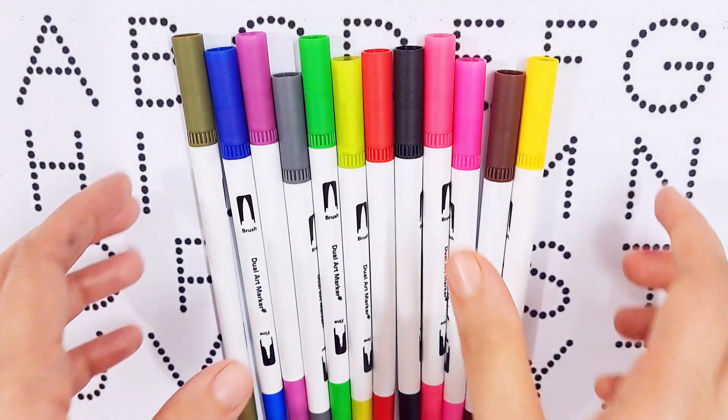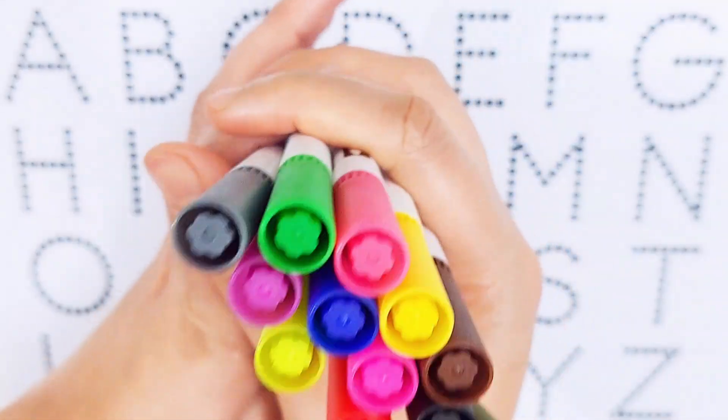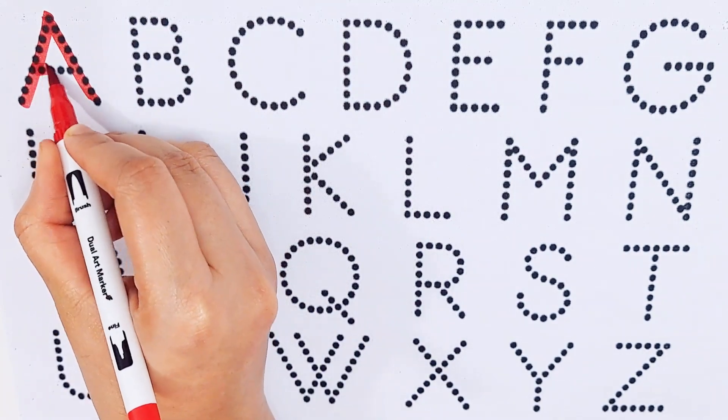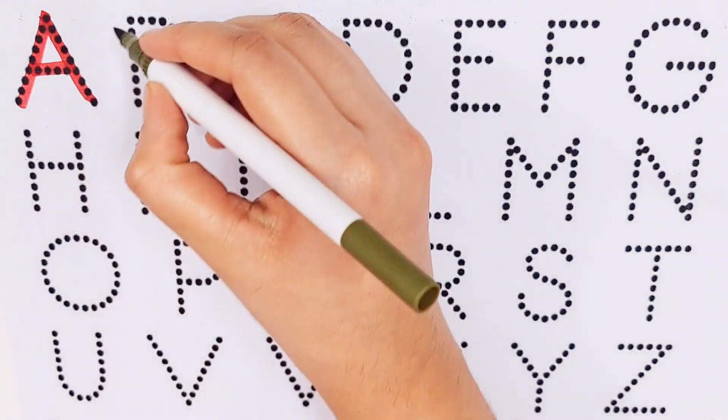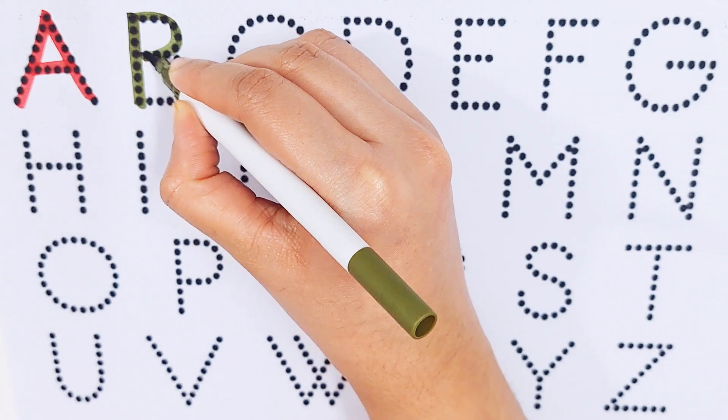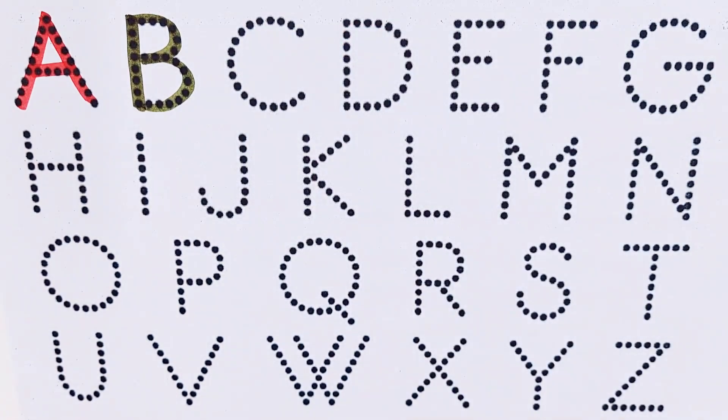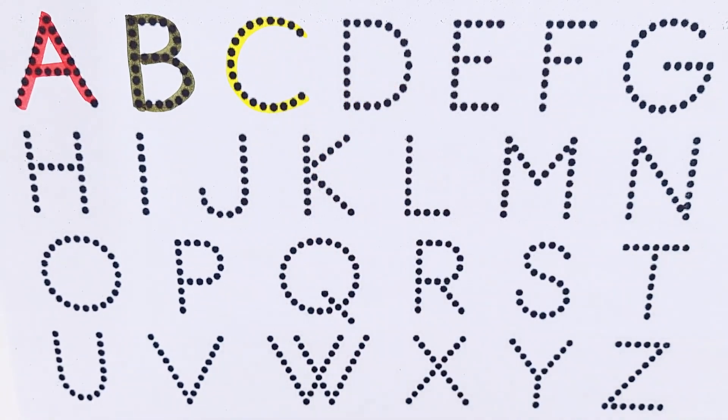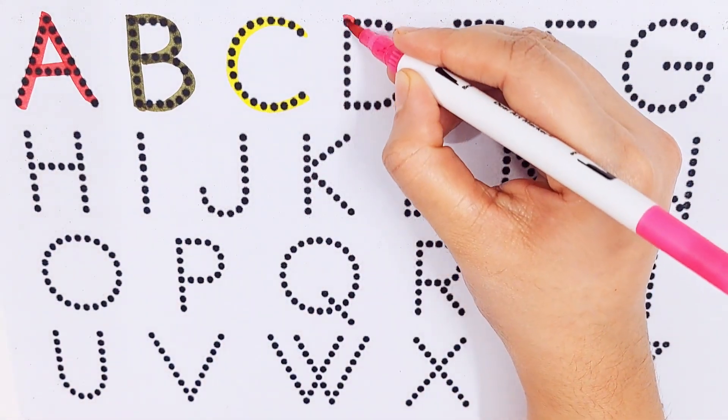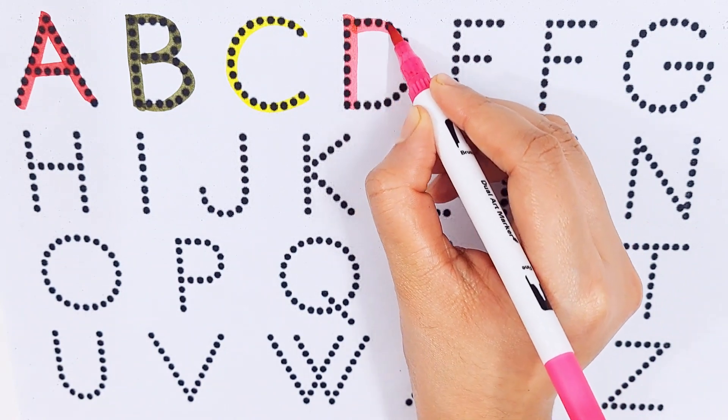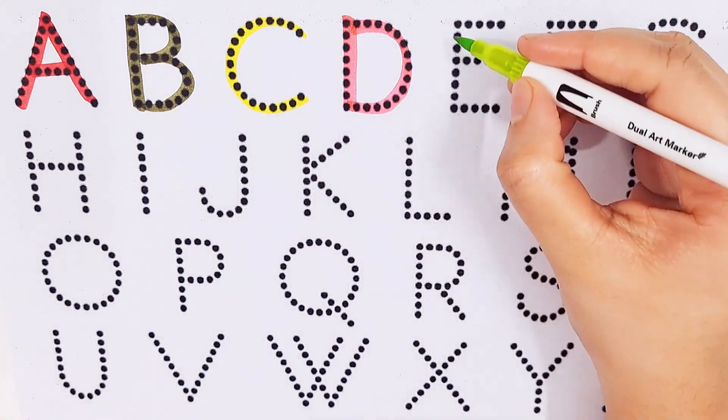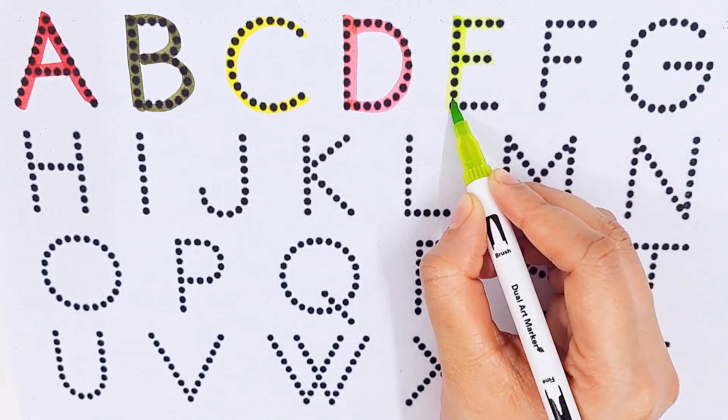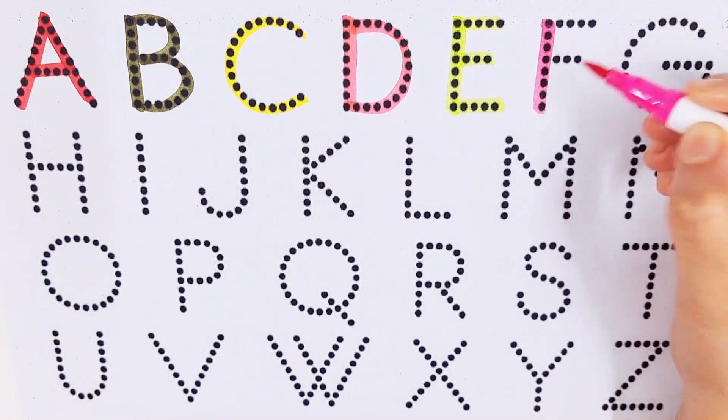A, a for arrow. B, b for box. C, c for chocolate. D, d for duck. E, e for egg. F...